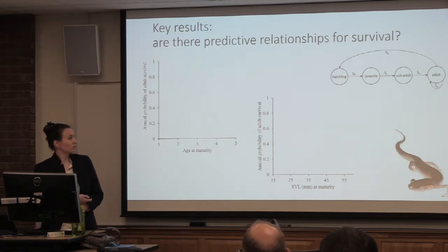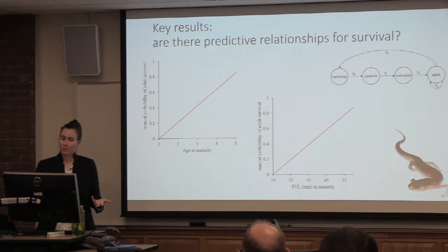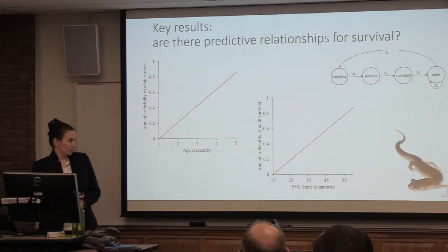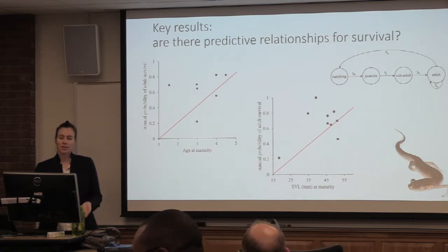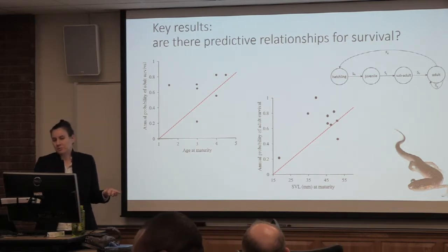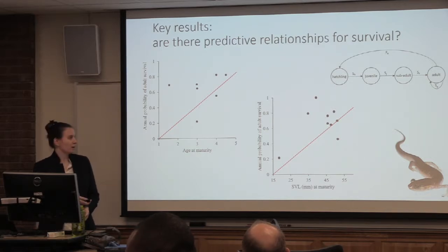So we would expect these pretty one-to-one relationships between the annual probability of adult survival and age and size at maturity. But instead what we see is this kind of pattern among survival estimates — it doesn't really look like it's doing what we would expect it to do. So it's hard to think we might be able to predict survival from these other rates.